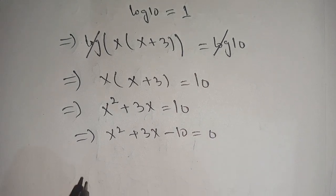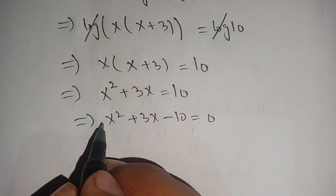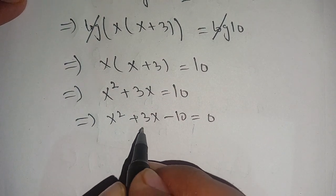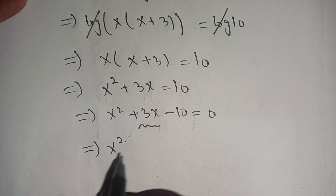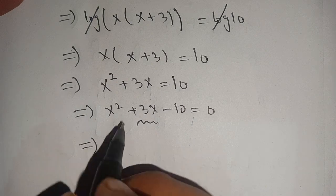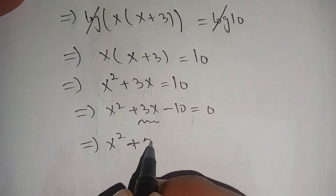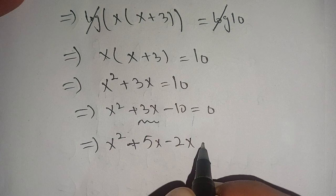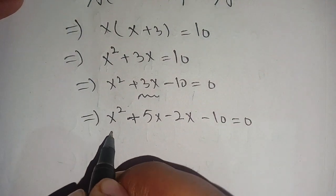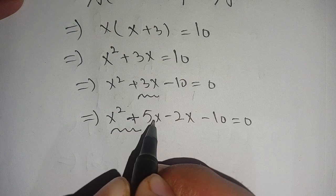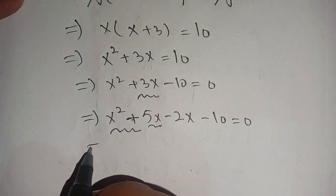Now it is a quadratic equation. We can break down its middle term. We get x squared plus 5x minus 2x minus 10 is equal to 0. Now we can take out x from this term as well as from this term and we get x times x plus 5 minus 2 times x plus 5 is equal to 0.